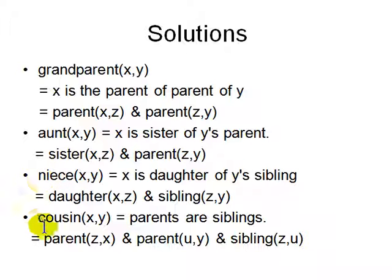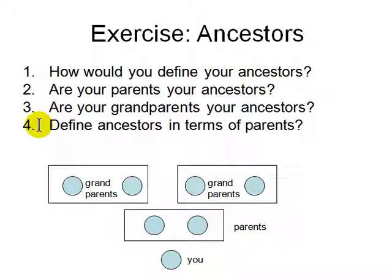What is cousin defined as? Cousin is when the parents are siblings. That means there is a z and u such that x and y have parents z and u, and z and u are siblings. The parents have a common parent.